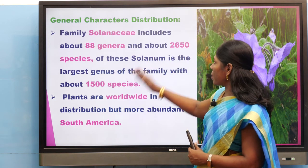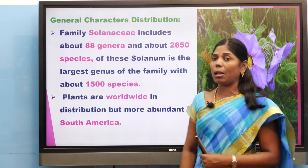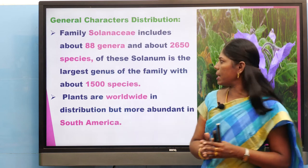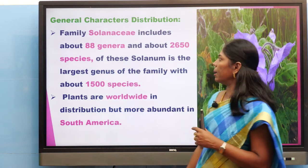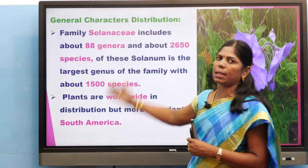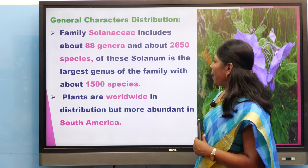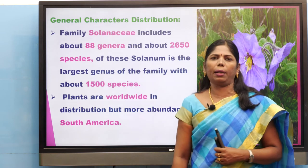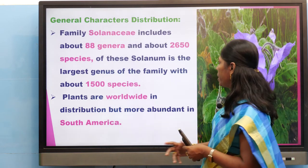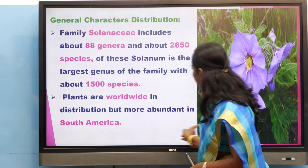Among the 2650 species, Solanum alone occupies 1500 species — it is the largest genus. The plants are worldwide in distribution but more abundant in South America.